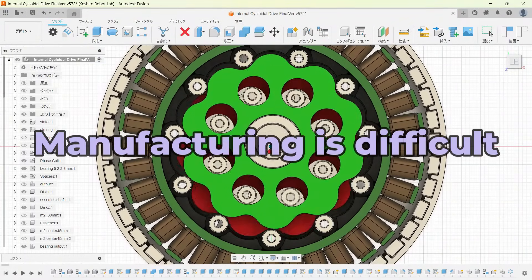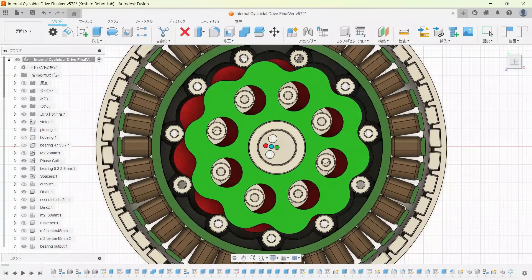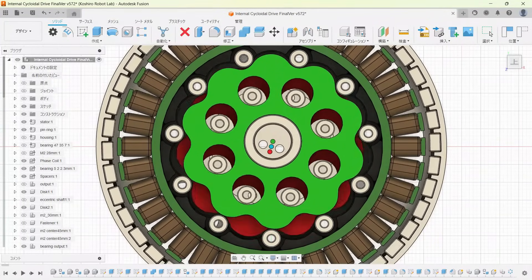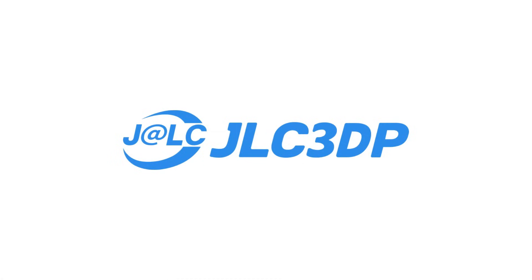Next, manufacturing these gears can be difficult because they require precise machining of special shapes, such as the cycloidal discs and the eccentric mechanism. This is where the sponsor of this video, JLC3DP, comes in.